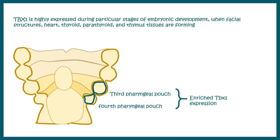TBX1 is an important transcription factor which is present in the third and fourth pharyngeal pouch. It is also enriched in facial structures, heart, thyroid, parathyroid, and thymus, and is present while these tissues are developing.